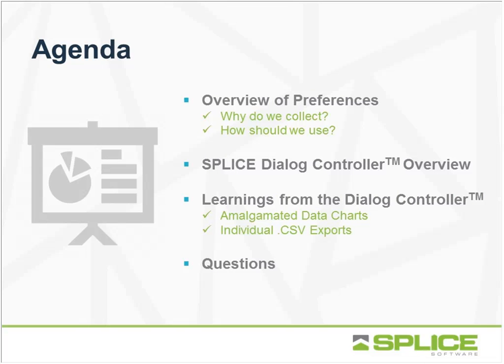A quick overview of our agenda for today: we're going to take a look at preferences — a quick understanding of why we collect preferences and how we need to be using them once collected. The flight dialogue controller is a facilitator of the collection of preferences, so understanding what we might want to use those for is really important going into looking at the data and charts. We'll go straight into a dialogue controller overview covering all the charts and data, some high level, some in more detail. And then the learning — we provide reports for a reason, to give you data insights so you can make decisions on your campaigns on a go-forward basis so they can be continually improved.